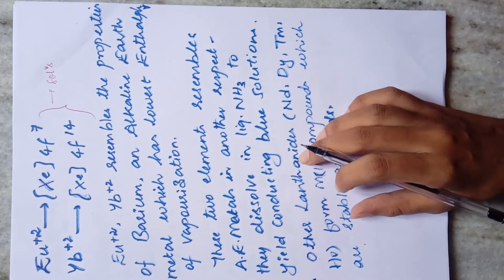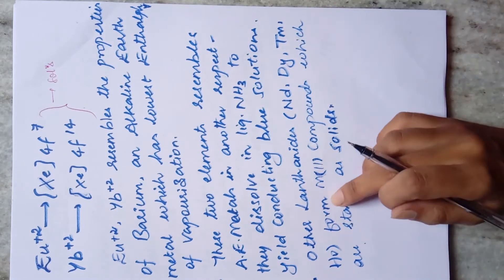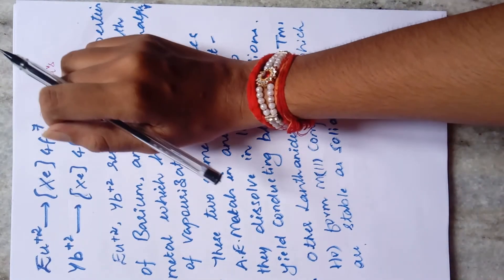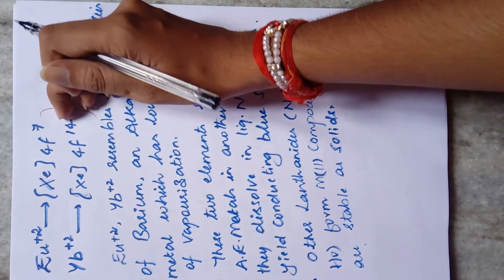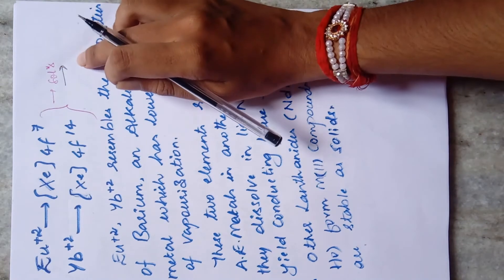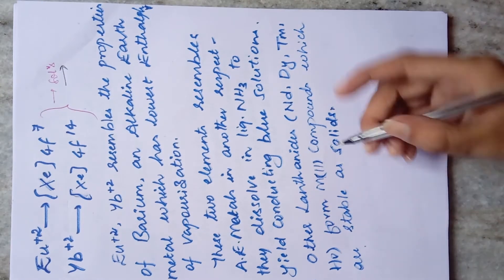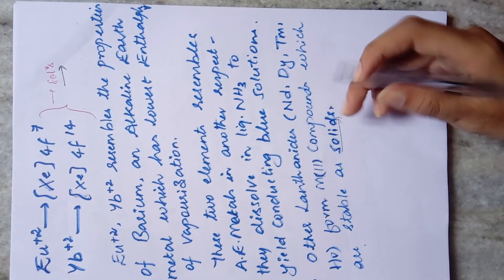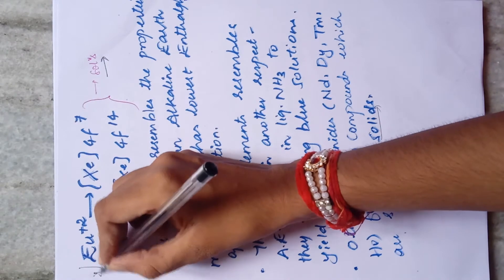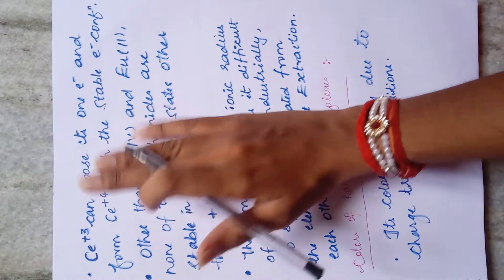Other lanthanides — neodymium, dysprosium, thulium, and holmium — also form M²⁺ compounds, but these are stable only as solids. In contrast, europium and ytterbium in the +2 oxidation state exist in solution form. That is the key difference to remember.